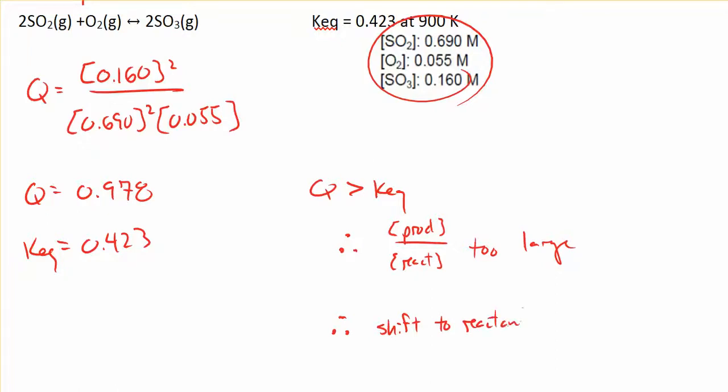So we'll shift to reactants, otherwise known as shifting left. And in order for this reaction to come to equilibrium, we'll see a net shift to the left.